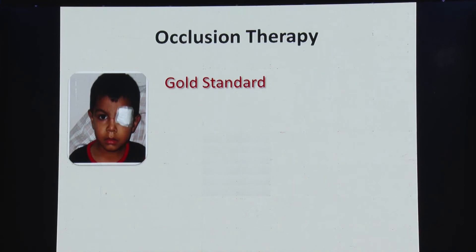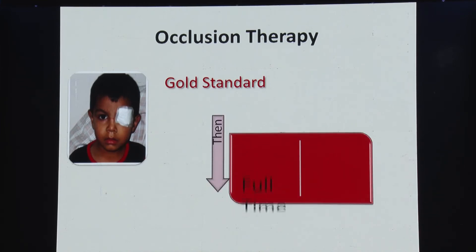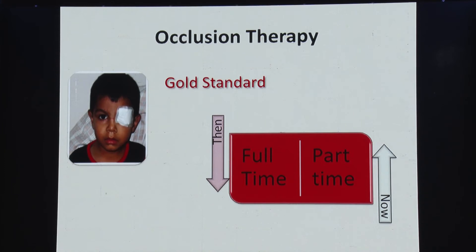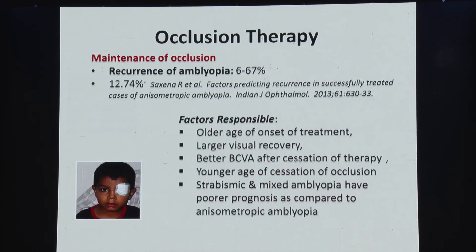Occlusion therapy still remains the gold standard. What has changed is that previously full-time occlusion was used, but most of us have now shifted to part-time occlusion because of PEDIG studies. Various PEDIG studies have shown that part-time occlusion of around six hours a day is as good as full-time occlusion for moderate to mild amblyopia. However, maintenance of occlusion is very important — if you suddenly stop occlusion, the chances of recurrence are very high. In a study done from our center, we showed almost 13% of patients will have recurrence. It is important to taper occlusion gradually from six hours to four hours, then two hours, rather than stopping it abruptly.